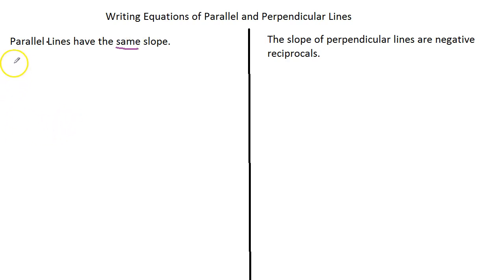So if we're given an equation of a line, let's say 4x plus 2y equals 7, and we're given a point that we want to find a line that is parallel to this given line but will pass through this given point, let's just say (4, -2).